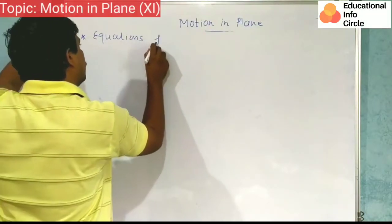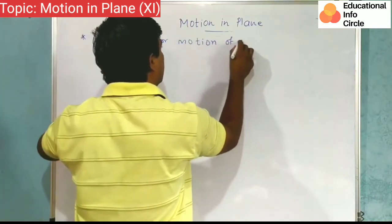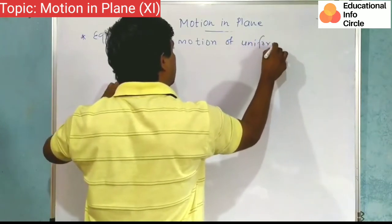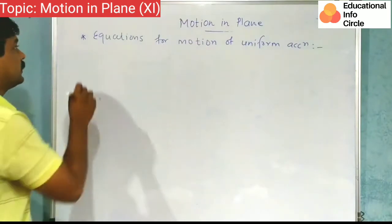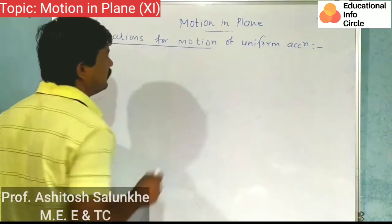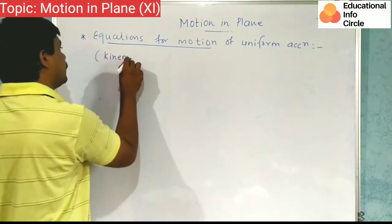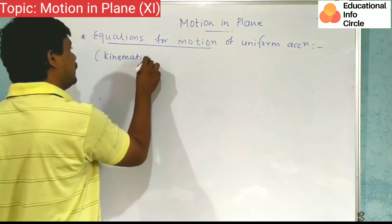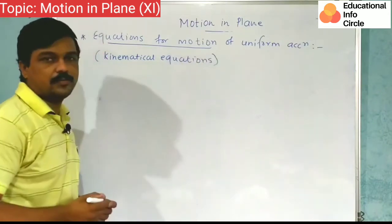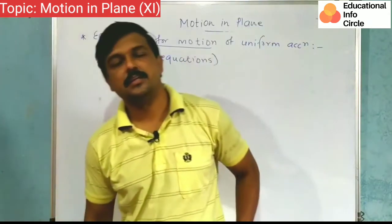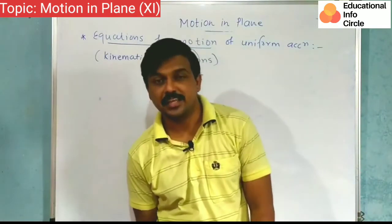Equations for motion of uniform acceleration - equations of motion, very important. These equations are also called kinematical equations. Three equations: v is equal to u plus at, then s is equal to ut plus 1/2 at square, and v square is equal to u square plus 2as.